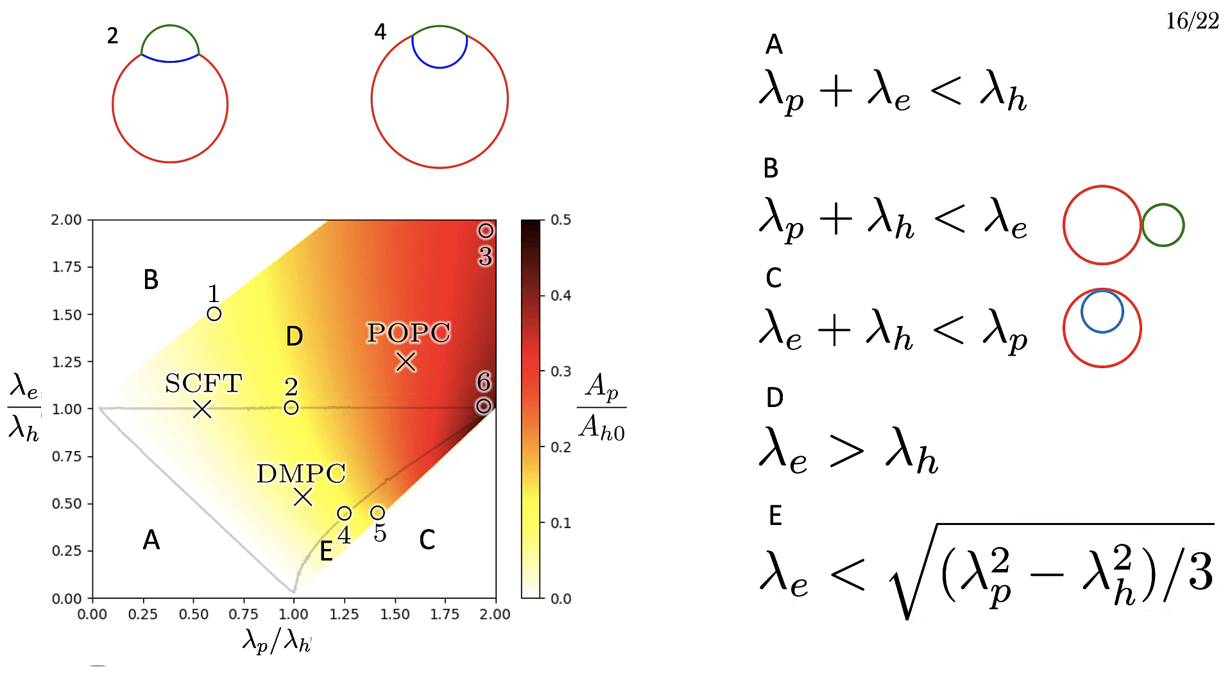Now this might all seem quite academic. You're here listening to a theorist babble about how cool geometry is. But to a biophysicist interested in things like the kiss and run mechanism, this is cool because we essentially have two control knobs, lambda E and lambda P, and if the cell can change these line tensions, it can move around in this phase diagram.